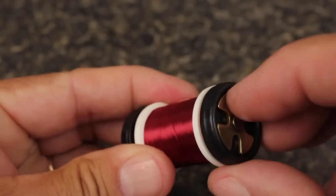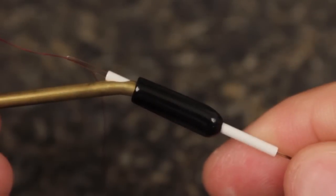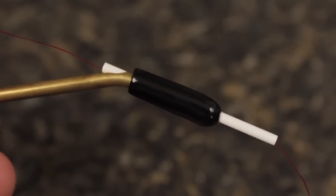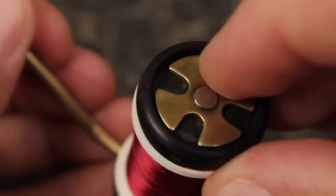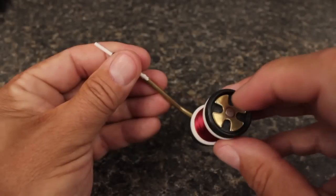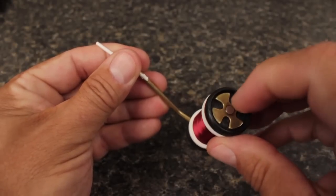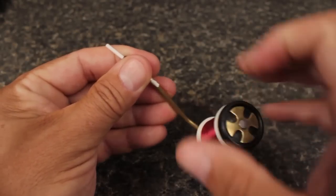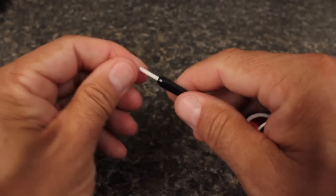Continue turning the knob clockwise until the desired drag tension is achieved. Each click changes the thread tension by approximately one ounce for precise thread control.